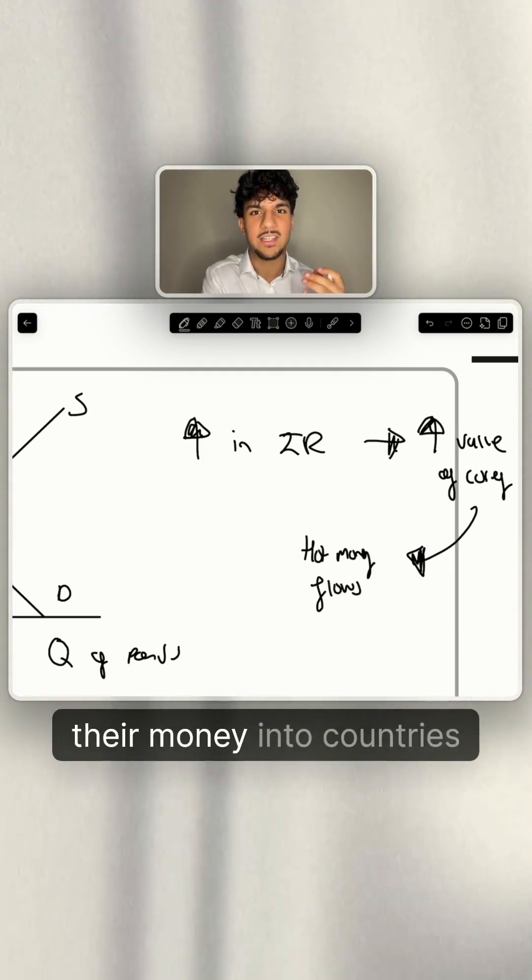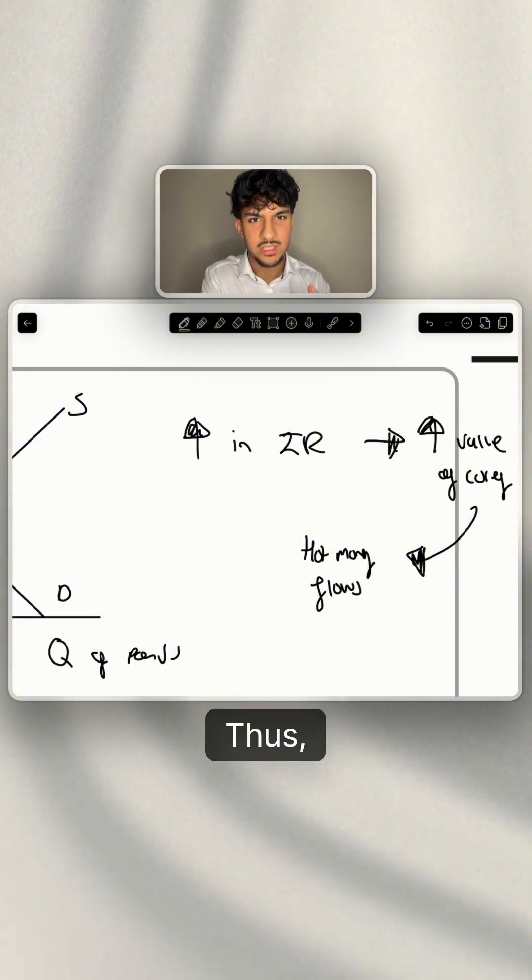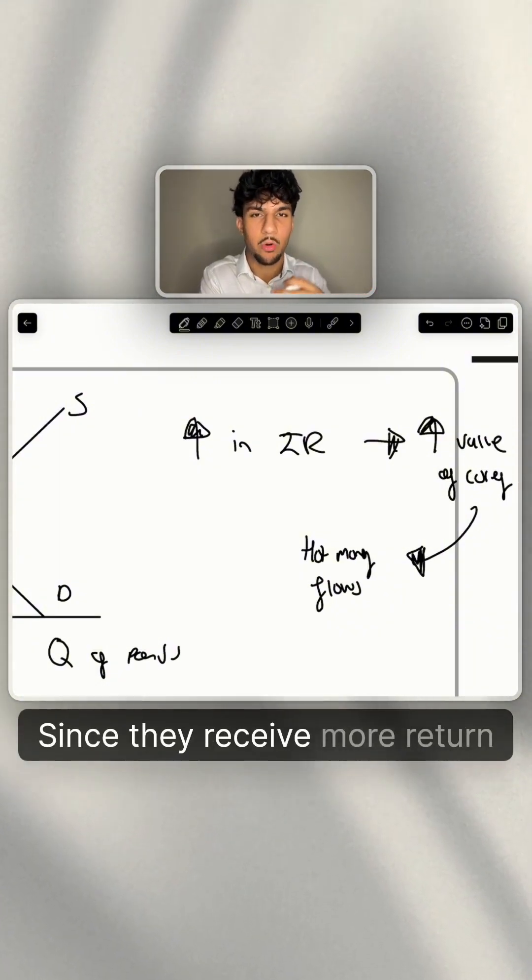So essentially, investors put their money into countries with the highest interest rates. Thus, why do they do that? Since they receive more return on the investment.